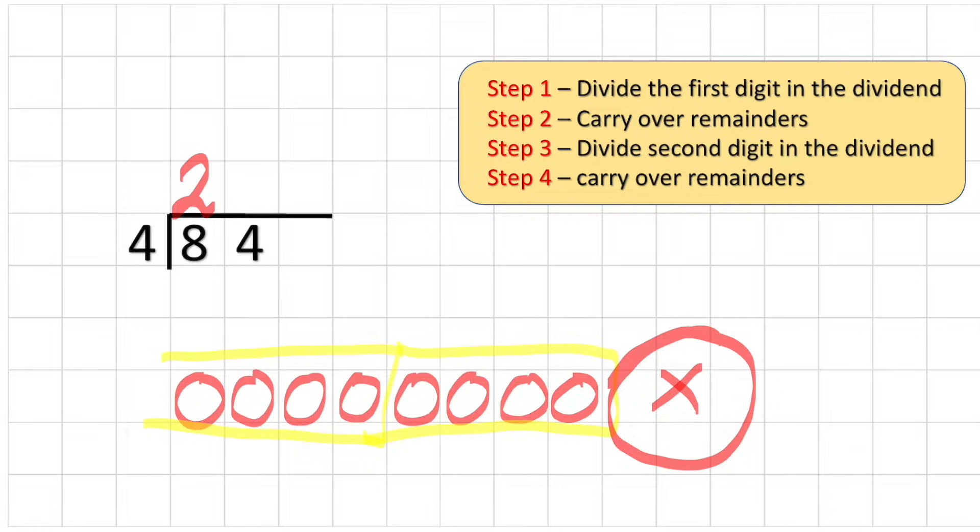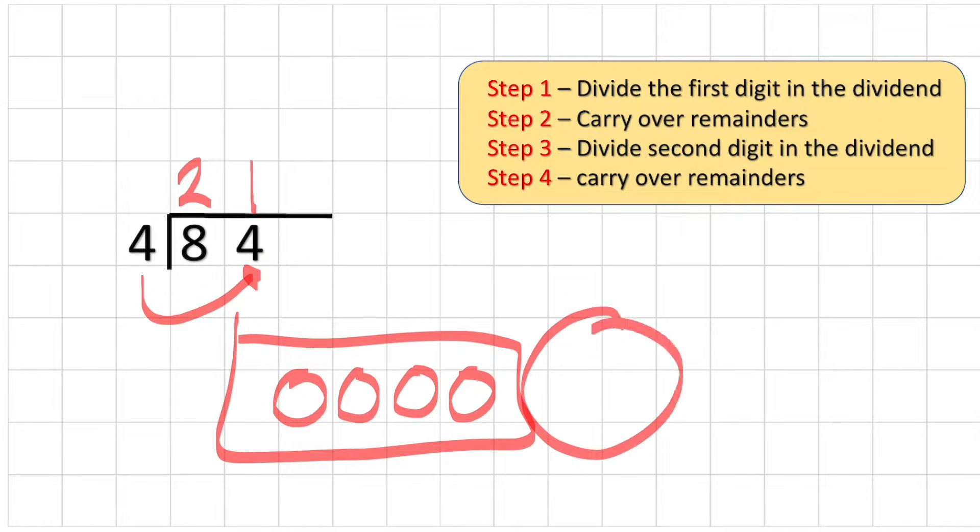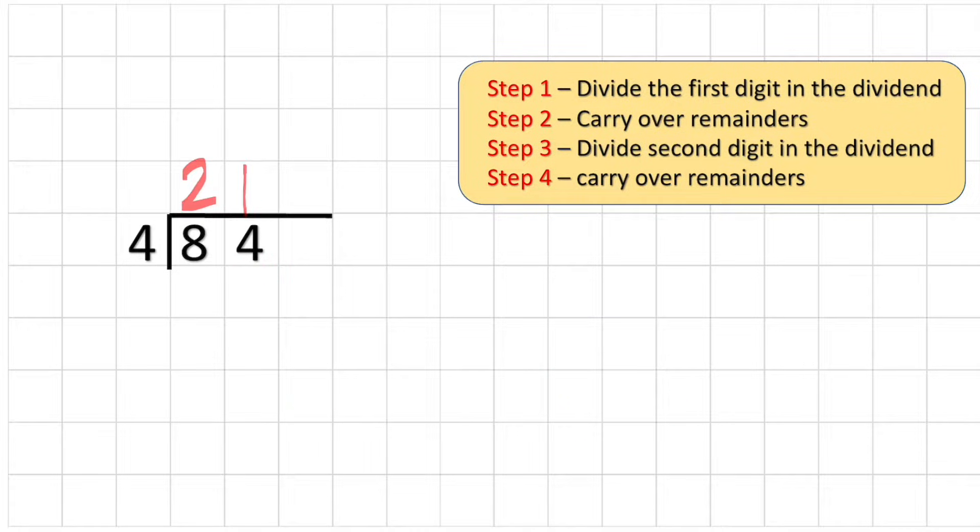So now we can ask step three, which is how many fours are there in four. And again, draw out my marbles to help me. I can see I have one group of four, so my answer is one. And again, there's nothing left over, so that's a clean answer, no remainders. So the answer to 84 divided by four equals 21.